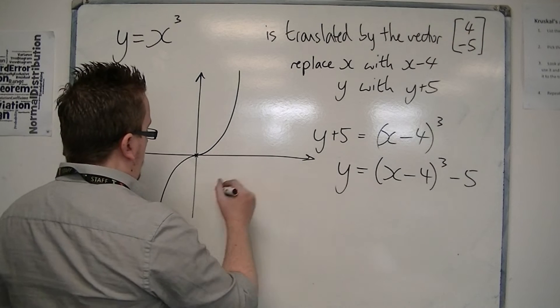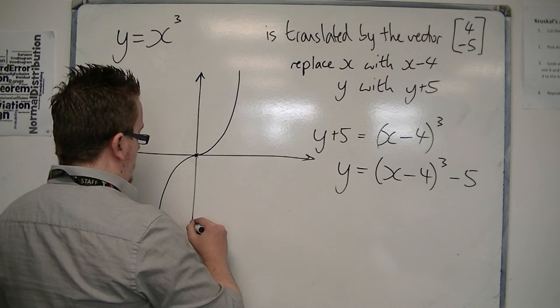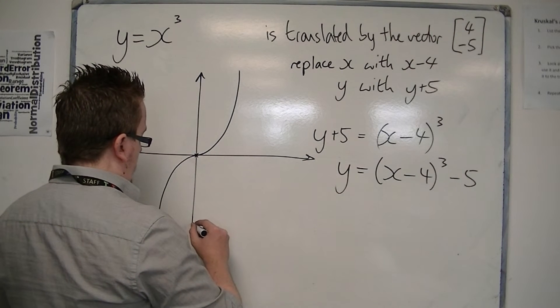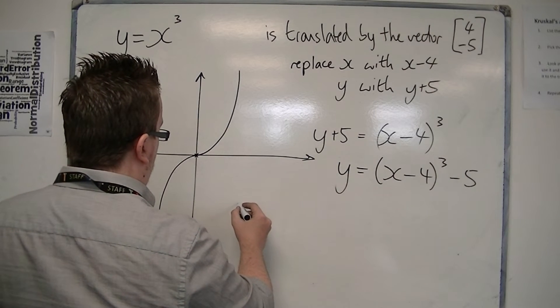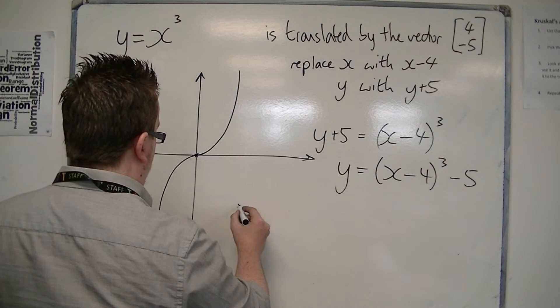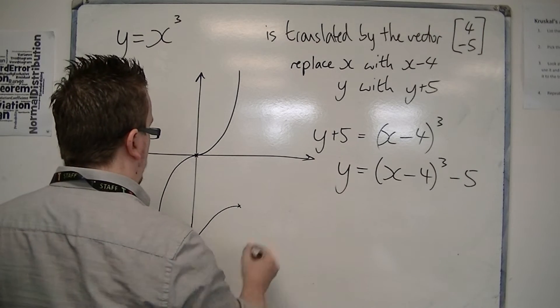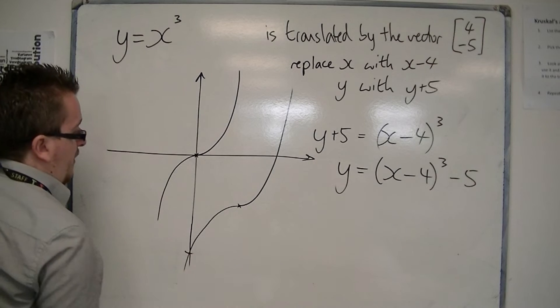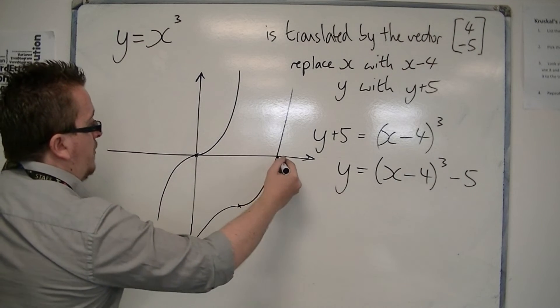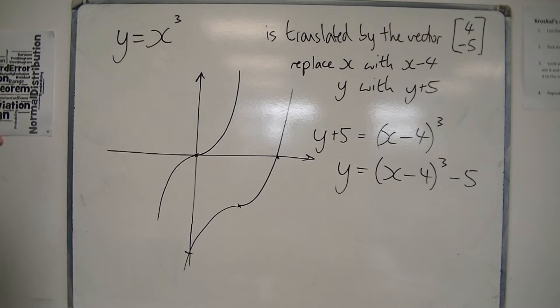So 4 long, 5 down. So the curve would end up looking something like, well, 4 long, 5 down, let's say it goes about there. So the curve now looks something like this. So it has this crossing point on the y-axis, this crossing point on the x-axis.